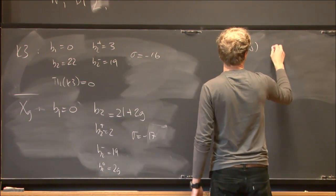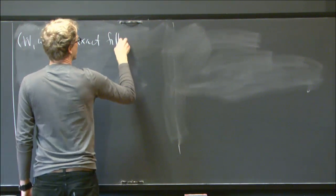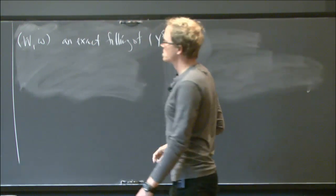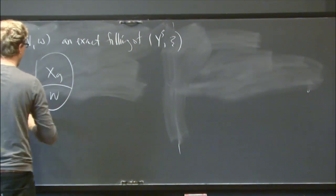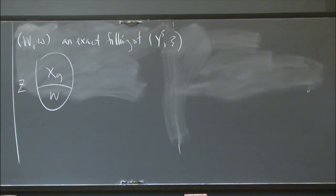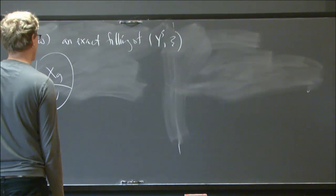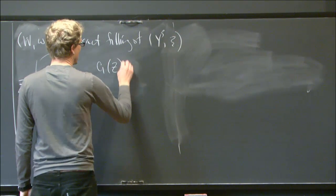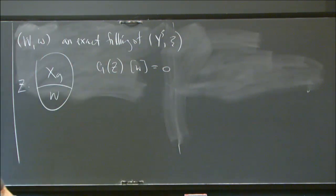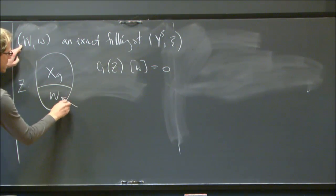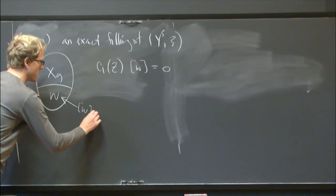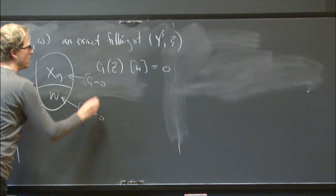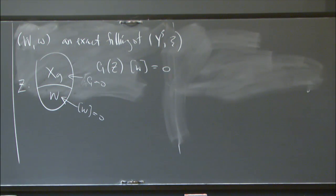Let's start with an exact filling. Y is the unit cotangent bundle. I take W and glue it to X_g to get a closed simply connected manifold Z. I know that c₁(Z) evaluated on the symplectic form is zero: if the filling is exact, the symplectic form class is zero down in W, so whatever c₁ is there, the pairing gives zero. And in X_g, c₁=0. So paired up, we get zero everywhere.